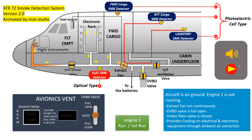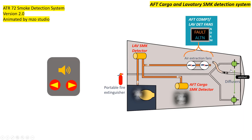The electric smoke detector is an optical type smoke detector. The two extraction fans are installed in the aft cargo area. They run alternatively and ensure a permanent airflow through the smoke detectors. Air ambient is drawn by venturi effect towards the aft non-pressurized compartment.